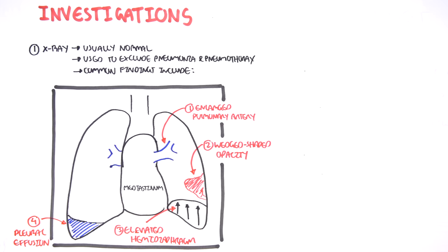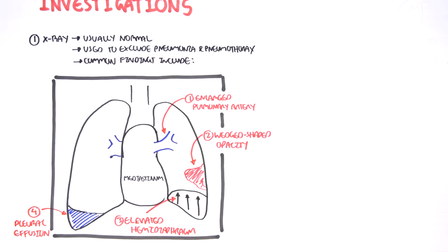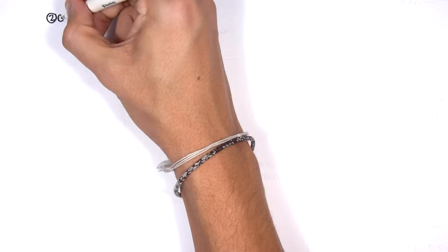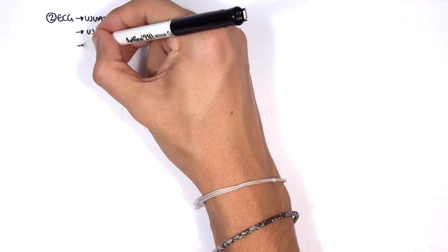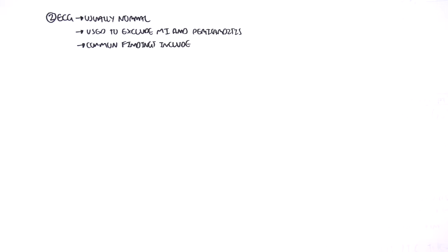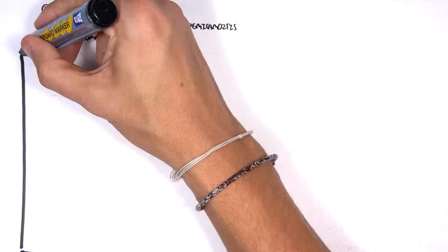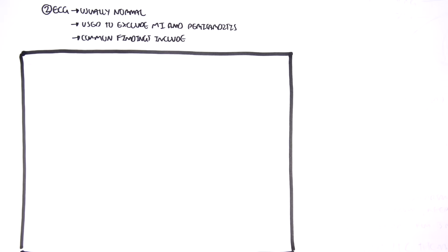The second investigation you can do, which should be done, is ECG. This also usually comes back normal, but it's used to exclude myocardial infarction and pericarditis. But you do find some common findings in PE, in pulmonary embolism. So let's have a look.